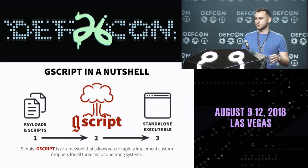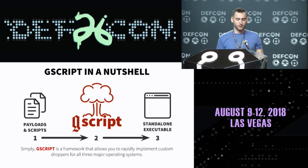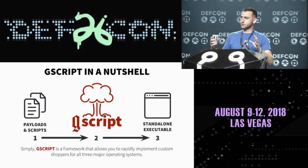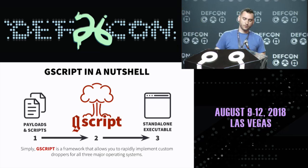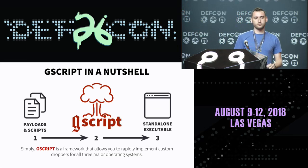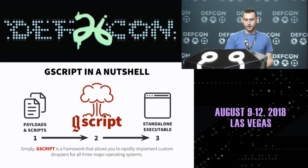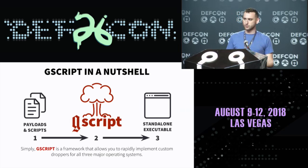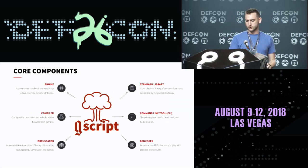But how do you use it? What does it look like to you as the red teamer? It's really easy. You have your payloads, you write a script for your payload, you use the G script compiler on the command line, and you get out a native binary. It couldn't be more simple than that.